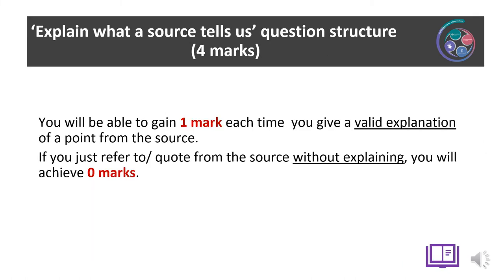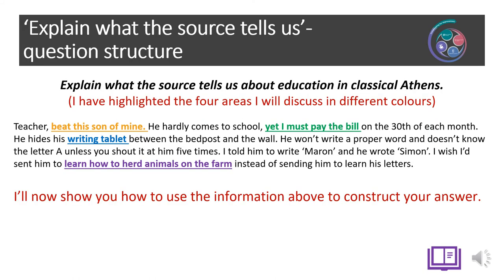Now we move to your explain what a source tells us question, worth a maximum of four marks. You gain a mark each time you provide a valid explanation of a point noted in the source. However, if you just quote directly from the source without explaining it, you will achieve no marks. The question requires you to read the source first. Question: Explain what the source tells us about education in classical Athens. I have highlighted four areas in different colours which I will be discussing.